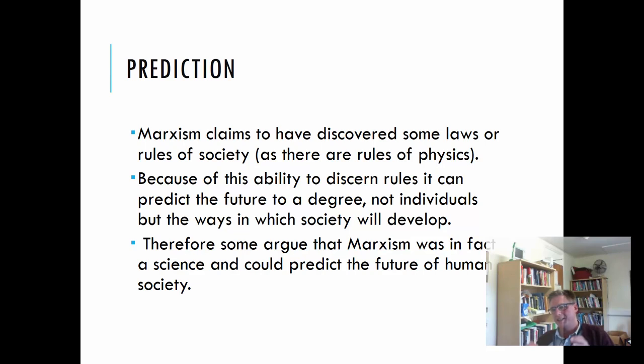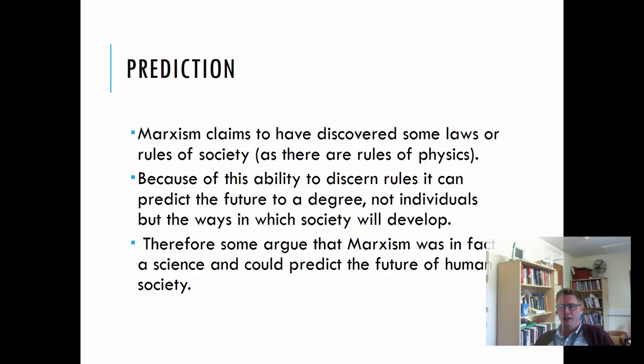Because of this ability to discern rules, it becomes possible to predict the future to a degree — not what an individual will do, but if you're a Marxist you can say that society will change and transform in a certain way. Many people look at Marx's work today and think he got it right — he exactly saw what's been going on in capitalism over the past 50 years, even though he wrote this stuff 165 years ago. Some therefore argue that Marxism was in fact a science that could predict the future of human society, though that's quite a disputed argument.